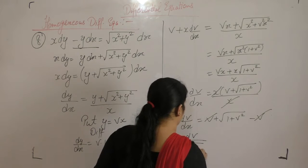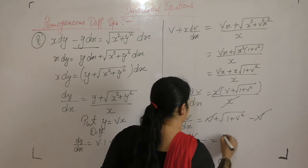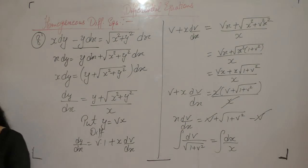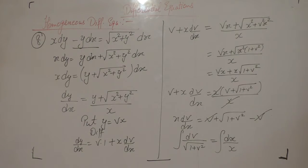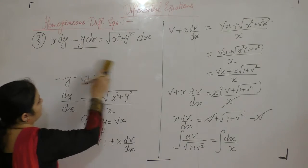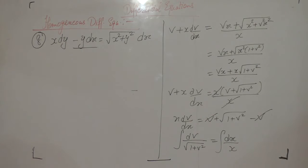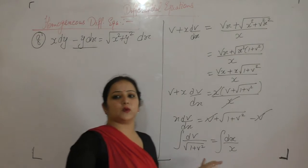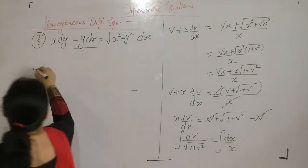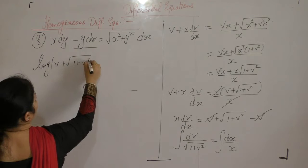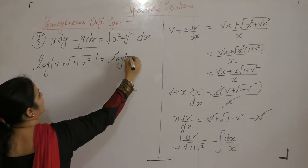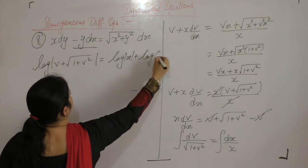This simplifies to dv upon square root of 1 plus v squared equals dx upon x. Taking the integral on both sides, the integral of 1 upon square root of a squared plus x squared equals log of x plus square root of x squared plus a squared. The integral of 1 upon x is log of x plus constant of integration.